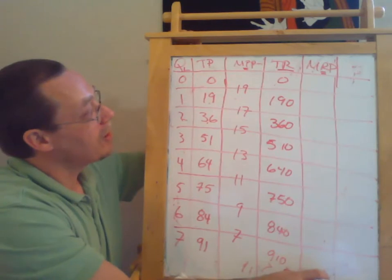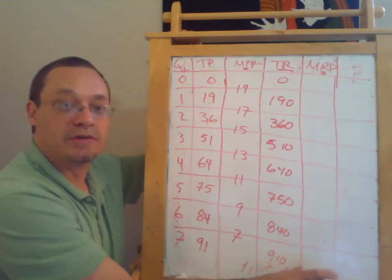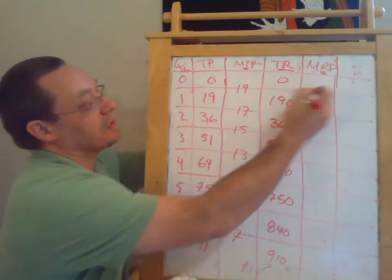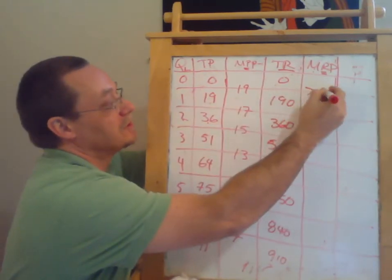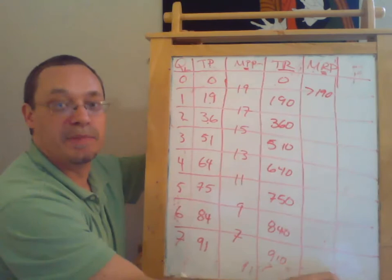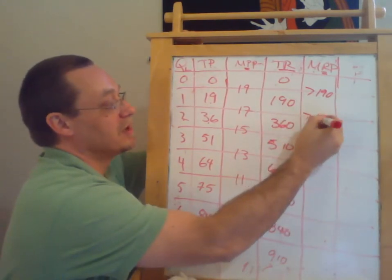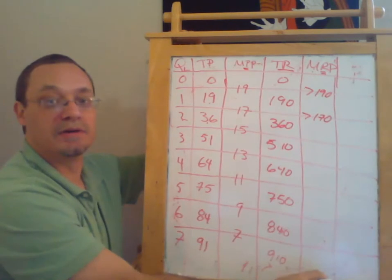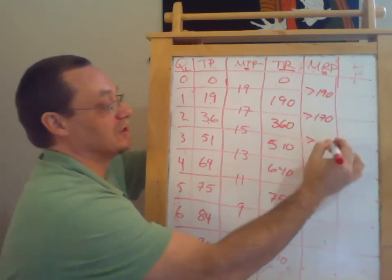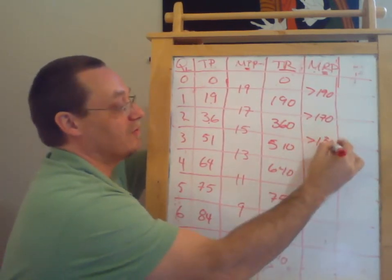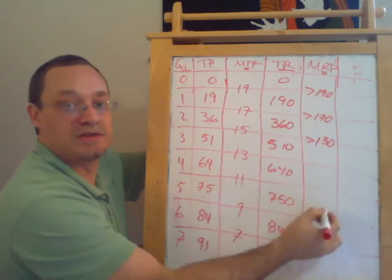So what is each worker's contribution to the actual bottom line? Well, the first worker causes our revenue to be 190 bigger. The second worker causes our revenue to be 170 bigger. The third worker causes our revenue to be 150 bigger. And so on and so forth down this line.